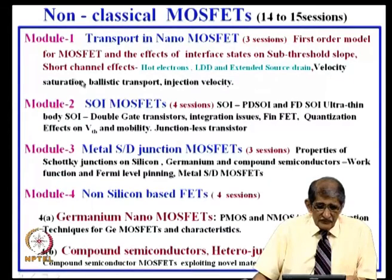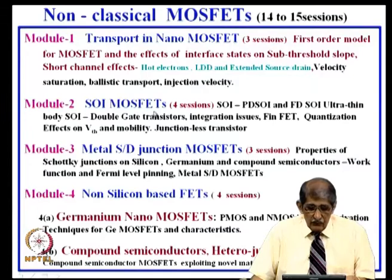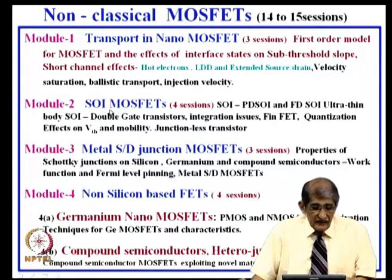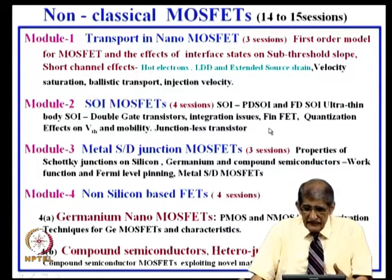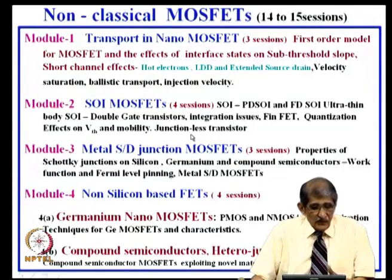Once we understand the problems and requirements for high performance, covering about 2 to 3 lectures, we move to Module 2: silicon-on-insulator MOSFETs (SOI MOSFETs), used regularly in industry — for example, IBM uses SOI MOSFETs for integrated circuits. We discuss different versions including FinFETs, quantization effects on threshold voltage and mobility, and the latest version called the junctionless transistor.